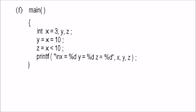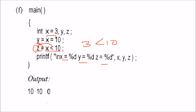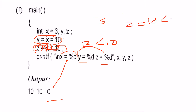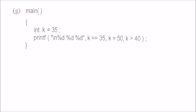x equals 3, y equals z. You are assigning y and x as 10, so y is 10 and x is also 10. Now you say x is less than 10, which is assigned to z. You are printing x, y, and z. y will print as 10. x was originally 3; 3 is less than 10, so z will be 1, but when you assign 10 to x, 10 is not less than 10, so z becomes 0. x and y will both be 10, but z will be 0.